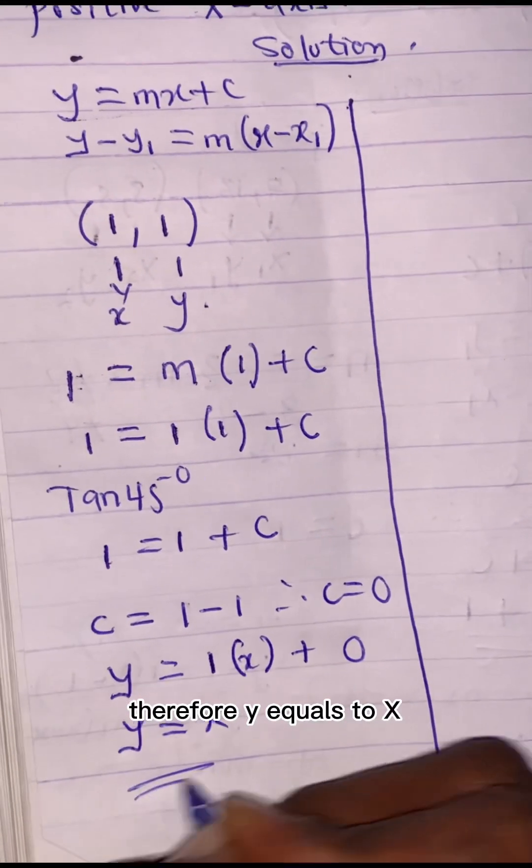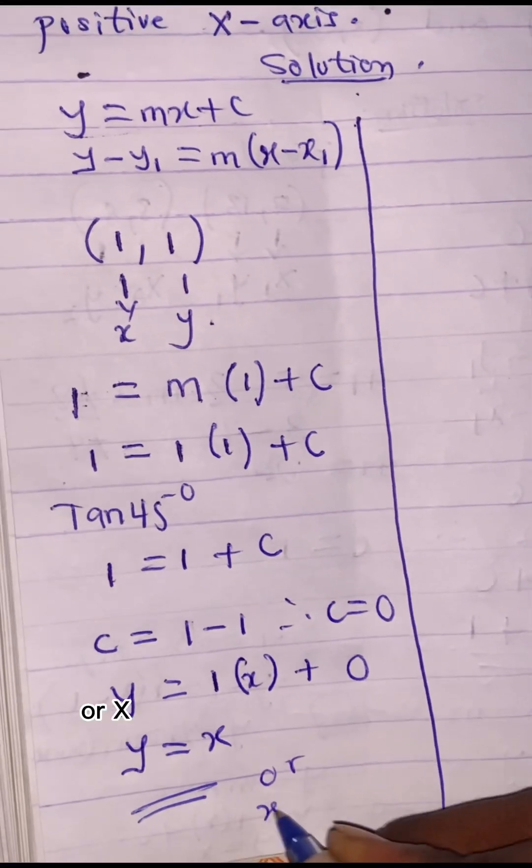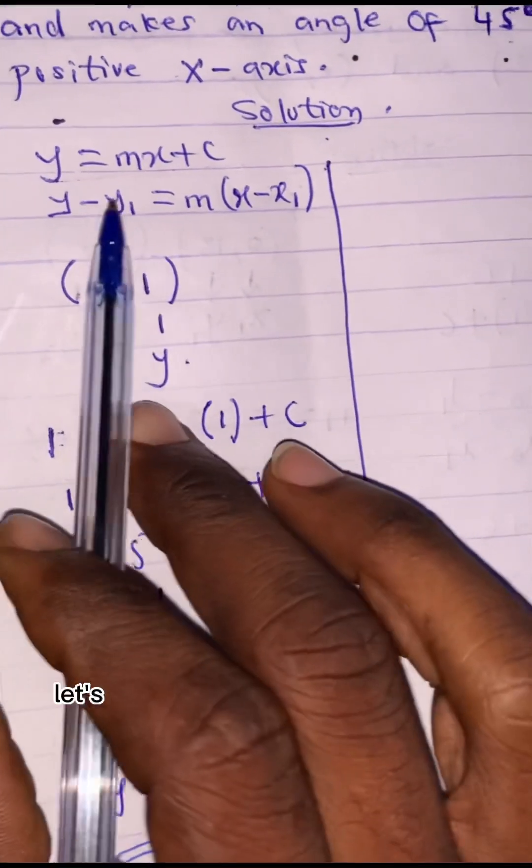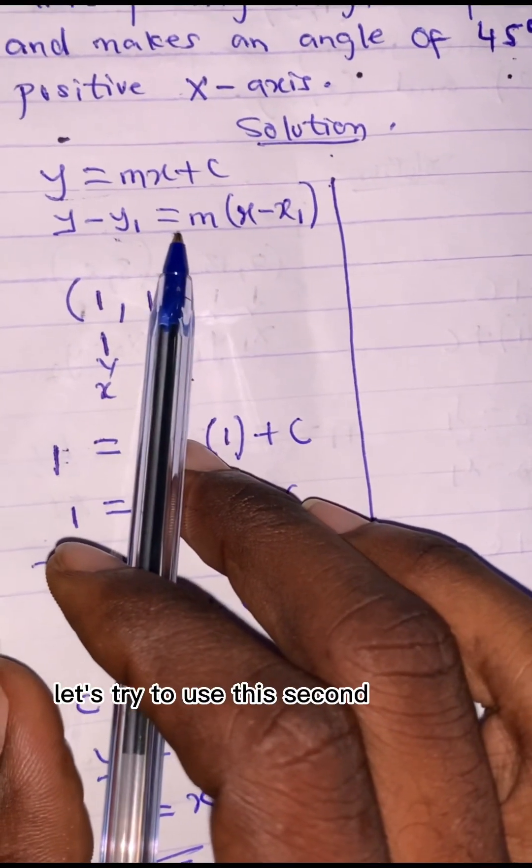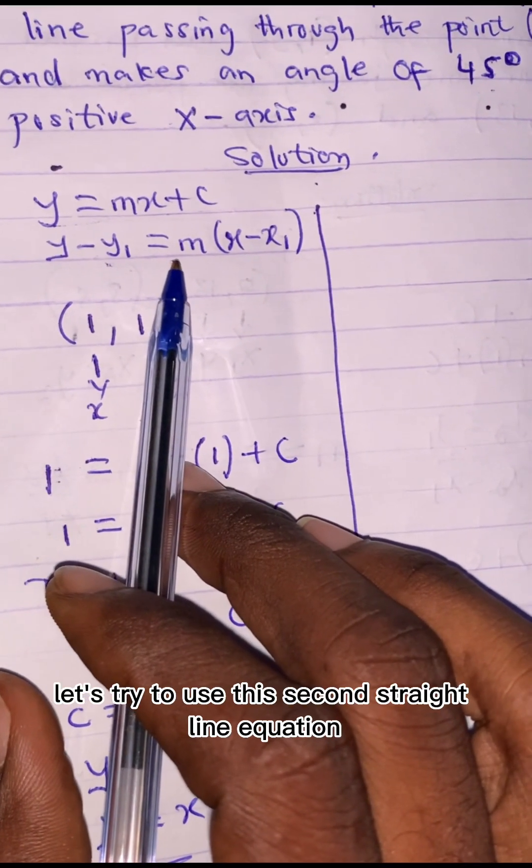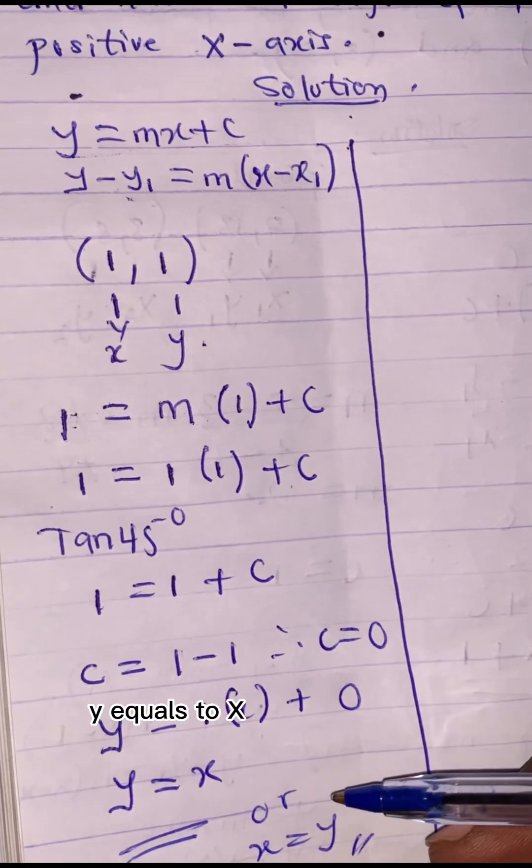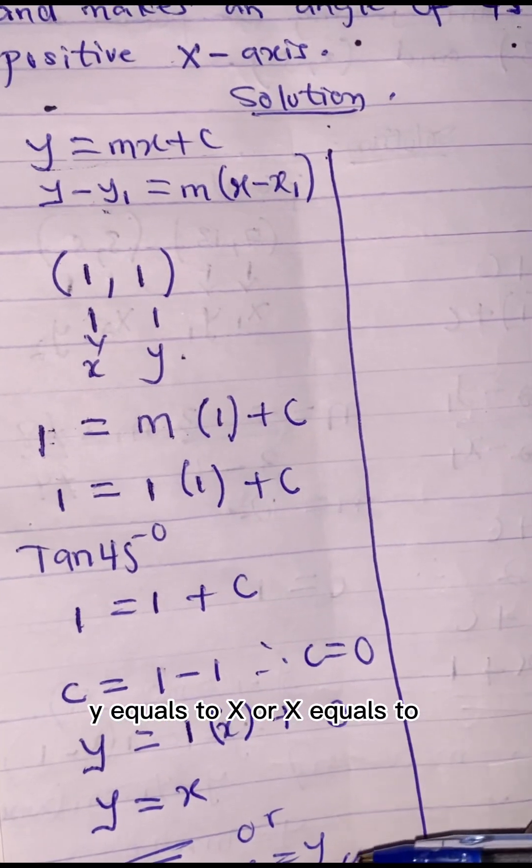y equals to x or x equals to y is all the same. So let's try to use this second straight line equation and see whether we can arrive to the same answer, y = x or x = y.